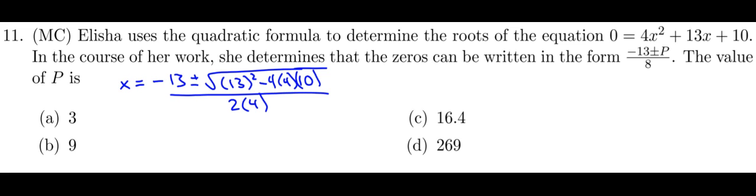So really what I have happening here is I just need to see what happens to that radical. I know this is going to be negative 13 plus or minus something all over 8. So I just got to figure out what's going on here. Well, 13 squared is going to be 169, and then negative 4 times 4 is negative 16 times 10 is 160.